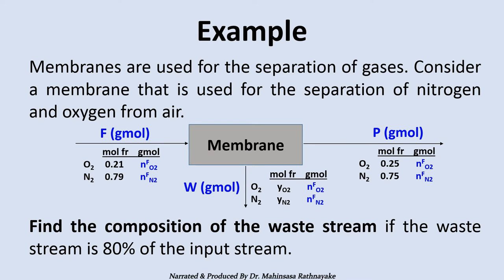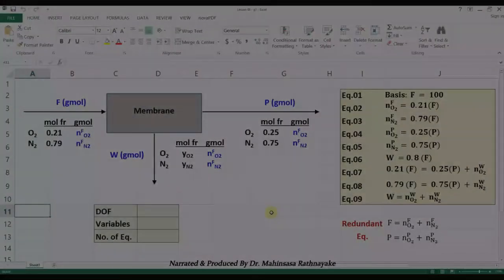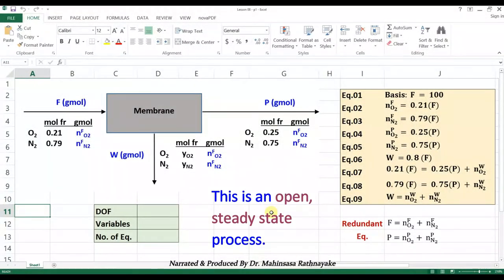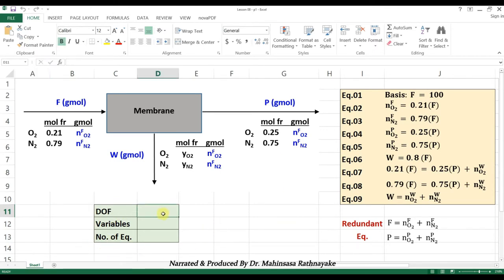Let's go to the Microsoft Excel software and try to solve this problem using the calculation tools in there. First of all, this is an open, steady state process without chemical reactions. In the figure, mole fractions and mole flows of all streams have been indicated. First, let's check the degrees of freedom.